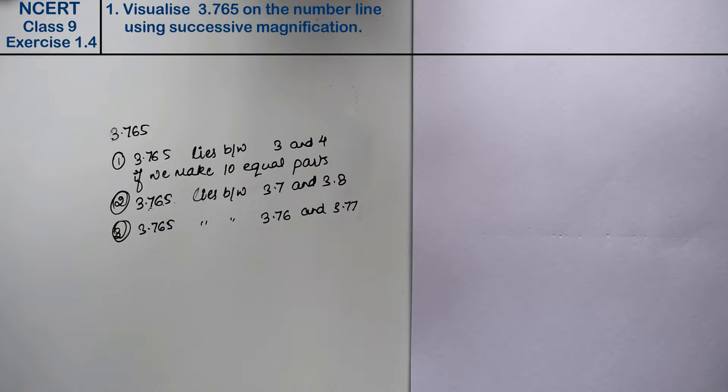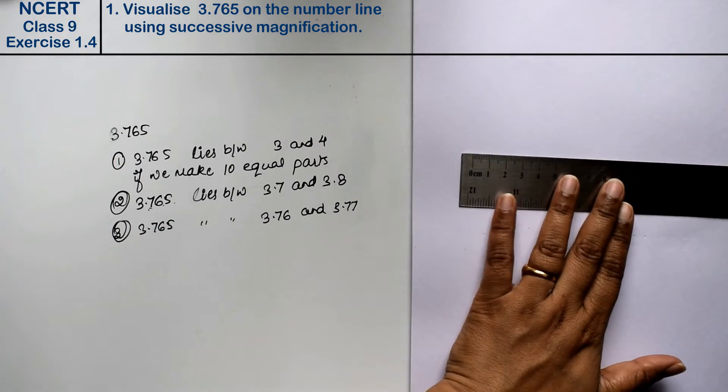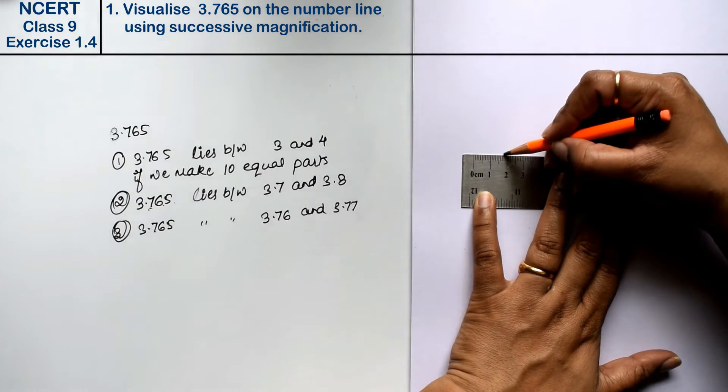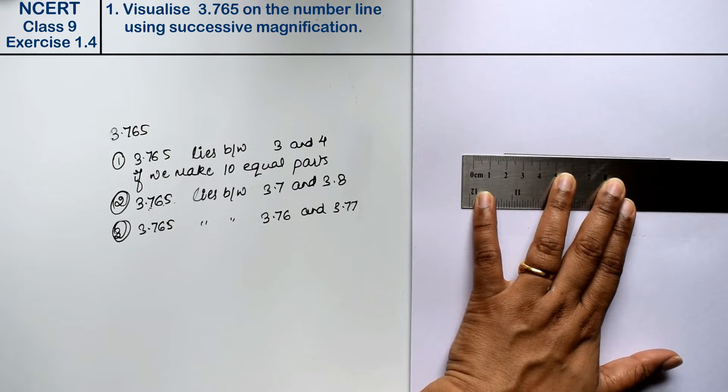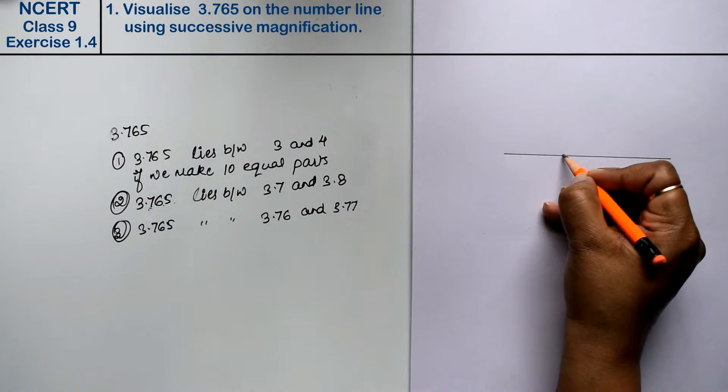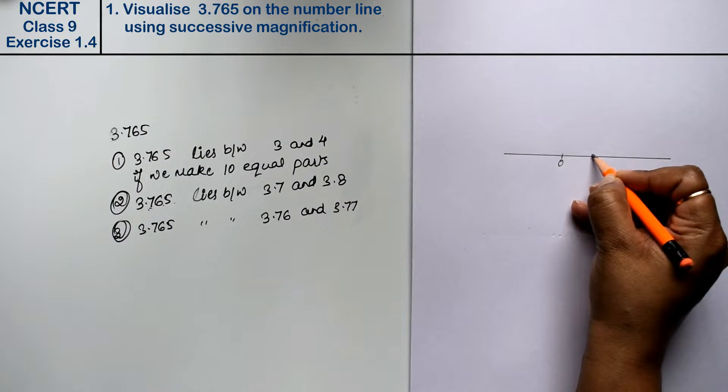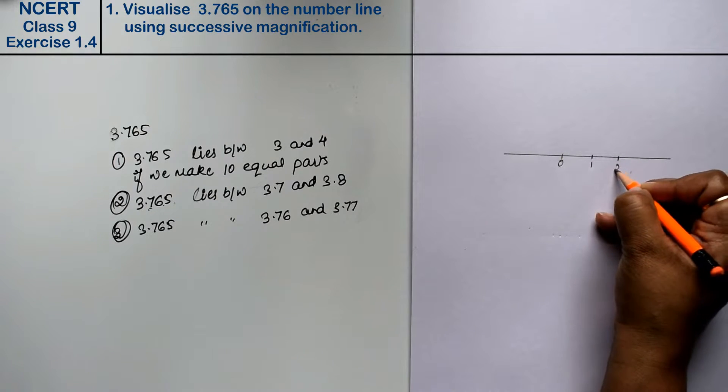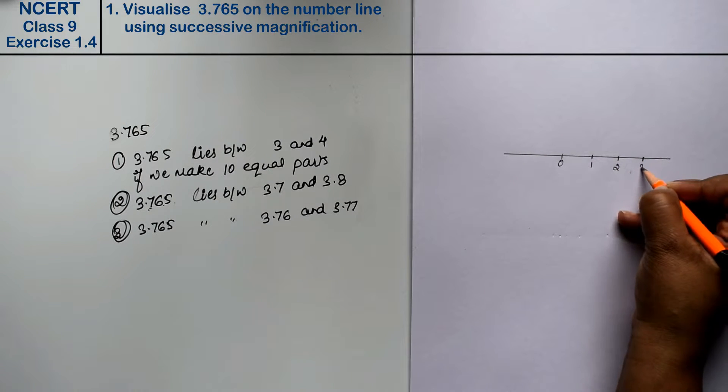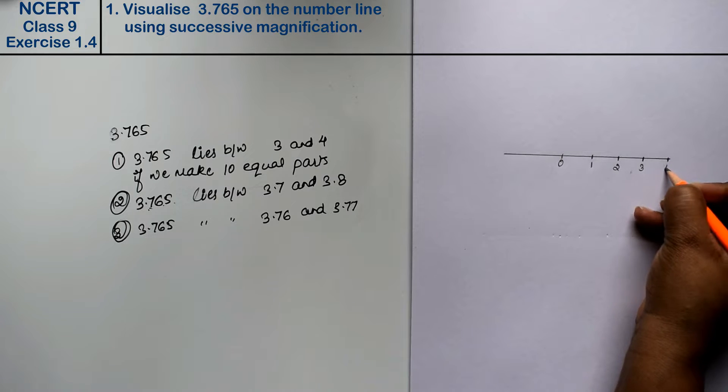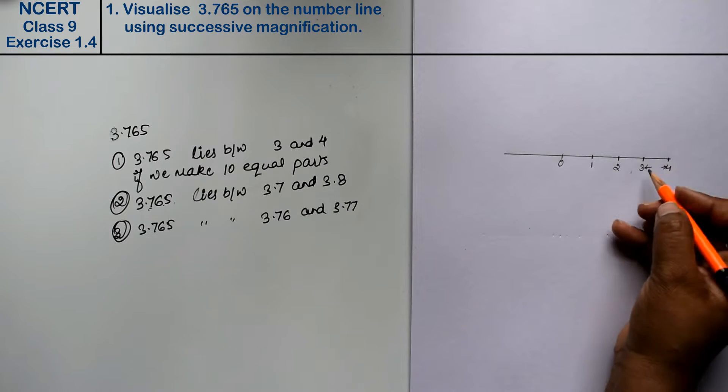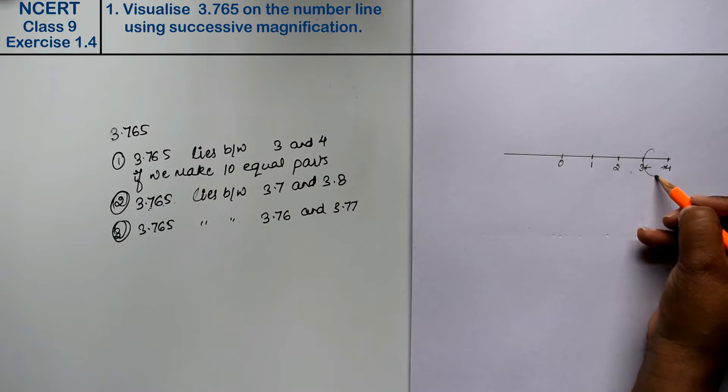First we will make a first number line, first step. I am making number line. This is 0 point, this is 1 point, 2, 3 and 4. So this will be placed in the second part. If you see magnifying glass recording, then it will be placed here.